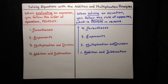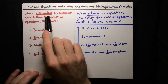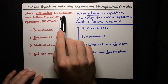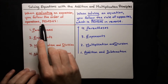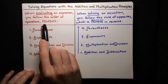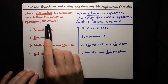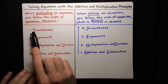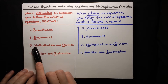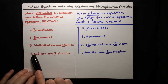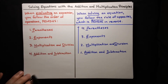In order to know what steps to follow when solving an equation, it's helpful to think first about how we evaluate expressions. When we evaluate expressions, we follow the order of operations, PEMDAS, which stands for parentheses, then exponents, then multiplication and division, then addition and subtraction.